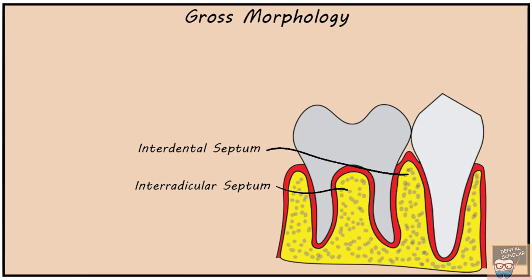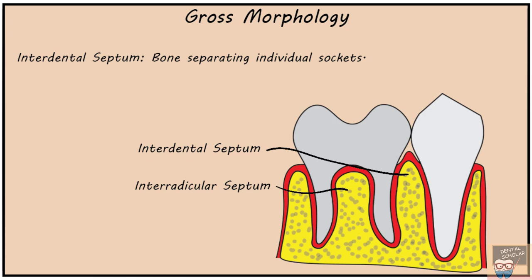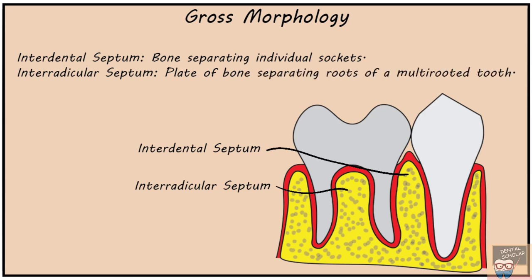Let's now go to the gross morphology of alveolar bone. The interdental septum represents that part of alveolar bone separating individual sockets — the alveolar bone between two teeth. The interradicular septum represents that part of alveolar bone separating roots of a multi-rooted tooth. For example, the bone between the mesial and distal roots of a mandibular molar is an interradicular septum, while the bone between a molar and premolar would be an interdental septum.